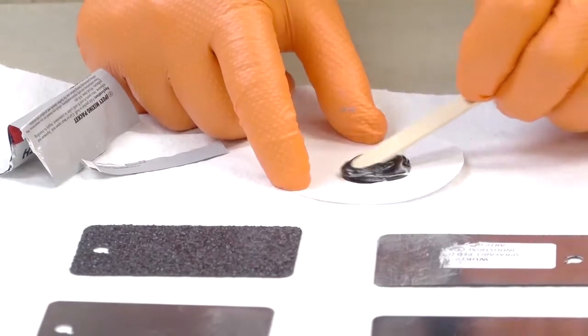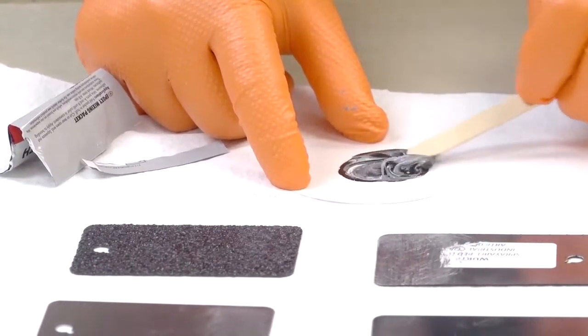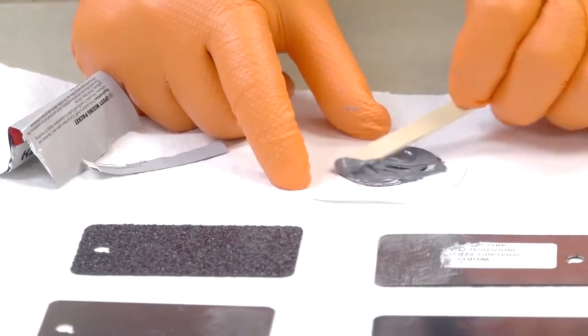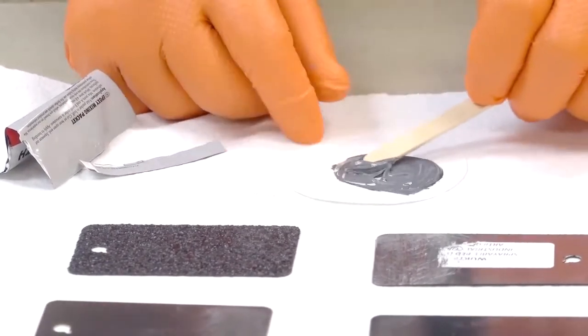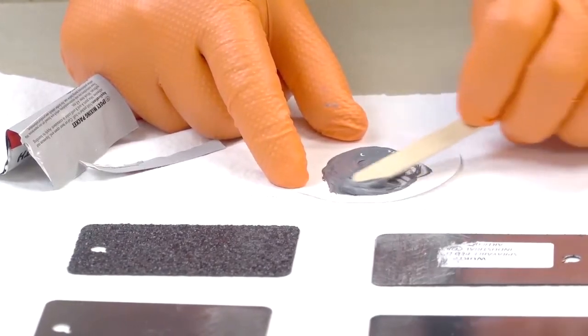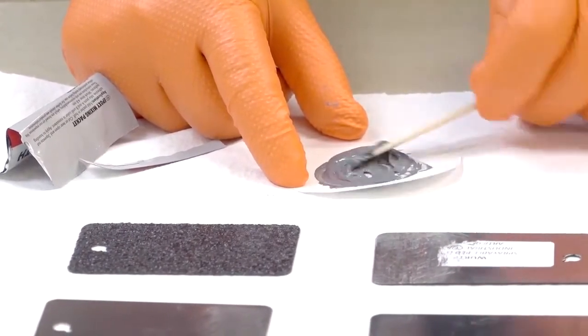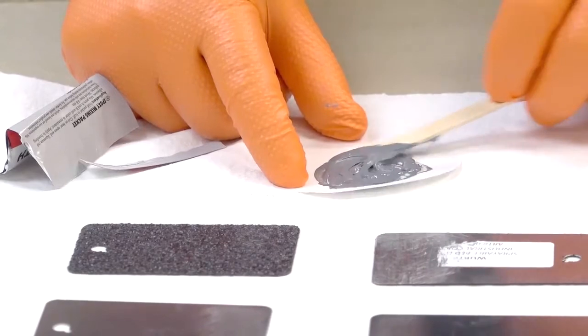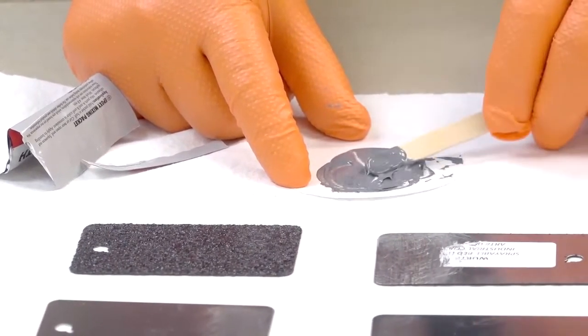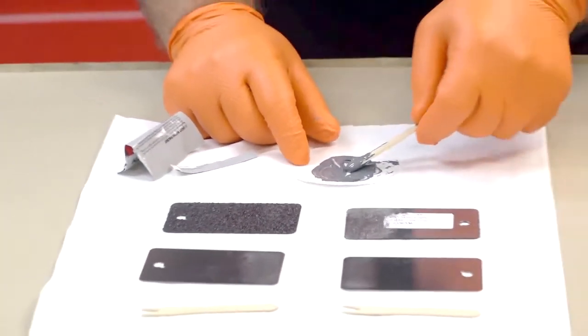Mix the product until it's a uniform color. It will turn a nice shade of gray and you want a consistent gray color before you make the repair. Once the product is mixed to a nice shade of gray, you can move forward to apply the product to your repairs.